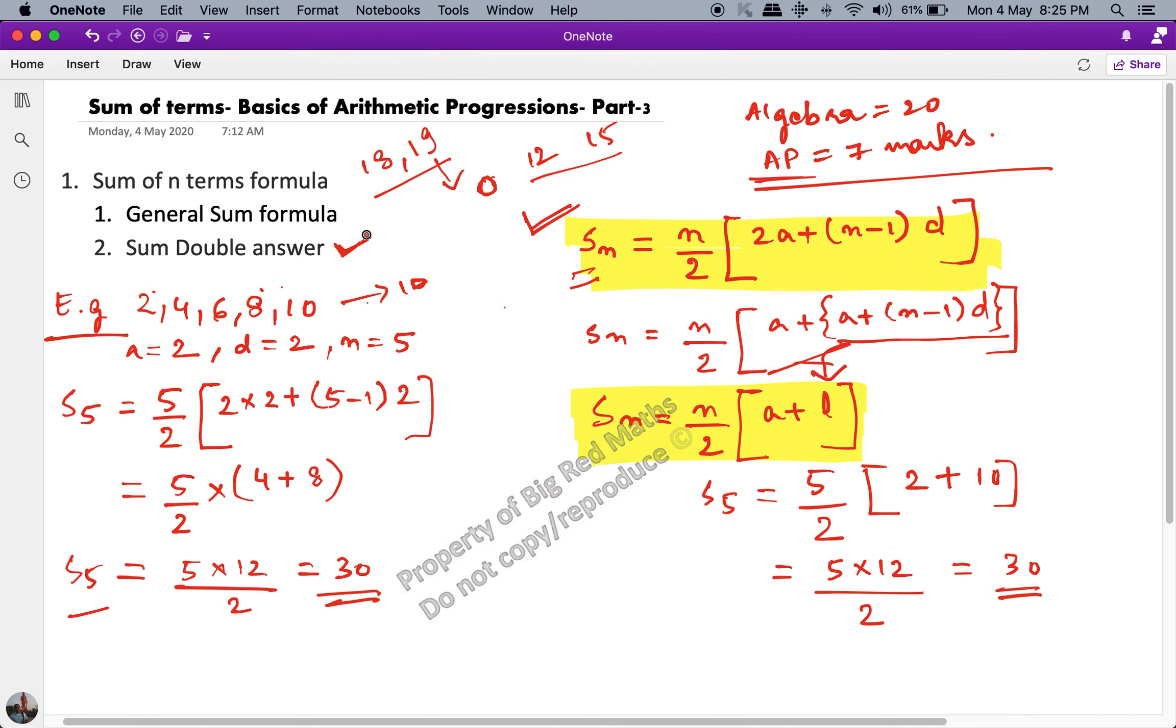So how do you explain the double answer or two values for the same sum? You explain that because in a reducing AP when you add some positive term and some negative terms, they might get cancelled and you get two values of n. So you get the same sum for two values of n.